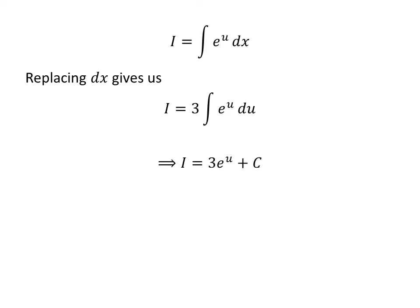The anti-derivative of exponential of u is exponential of u, so I is equal to 3 times exponential of u plus capital C. Capital C is the arbitrary constant of the indefinite integral. Do not forget to add this constant.